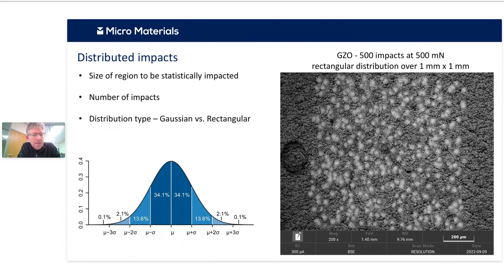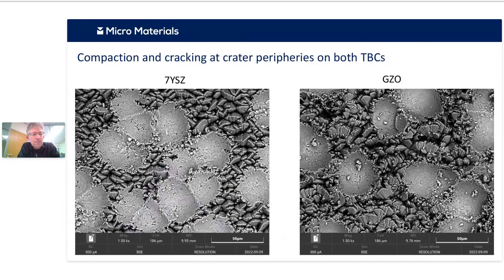The next stage was to do the randomized impact test. You can do different types of distributions — a Gaussian distribution where higher probability of impacts occur near a central spot, or equally spaced rectangular distributions. An example shows 500 impacts. Zooming in on the randomized repetitive impact tests, under these conditions you can see compacted regions of the surface and how the damage between different impacts is starting to progress, but there's untouched material between the impacts. These are relatively early stages — compaction and cracking at the peripheries of the dominant deformation.